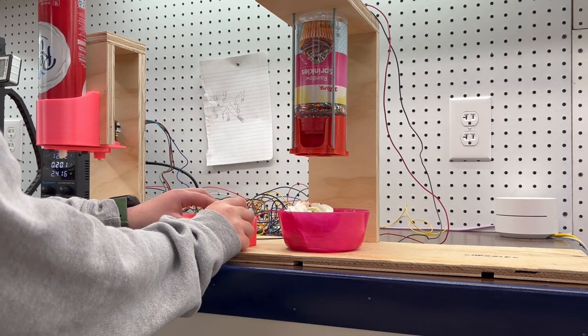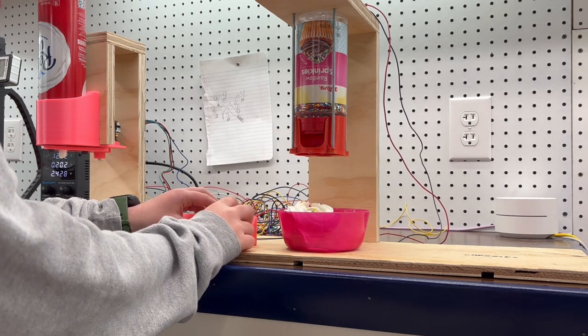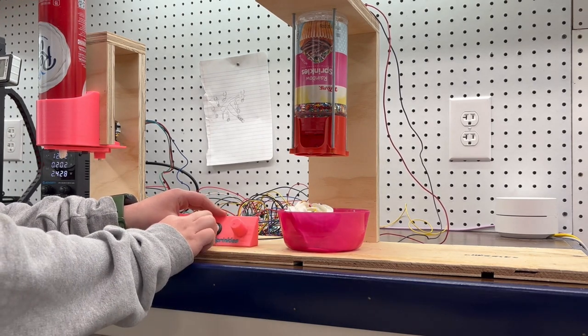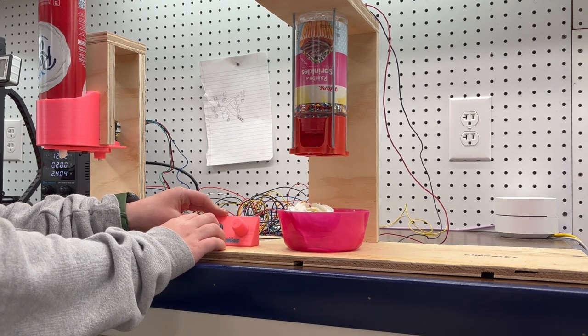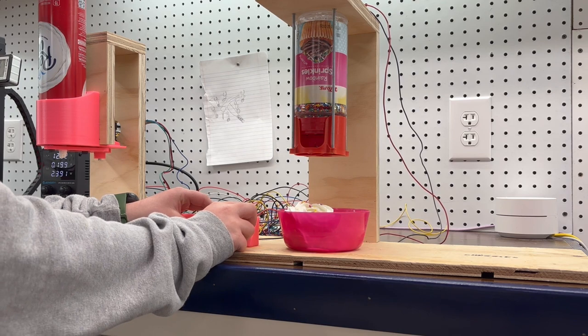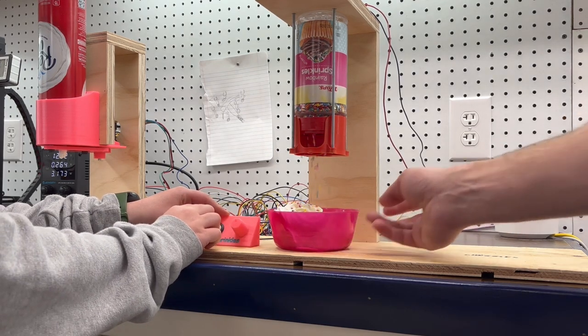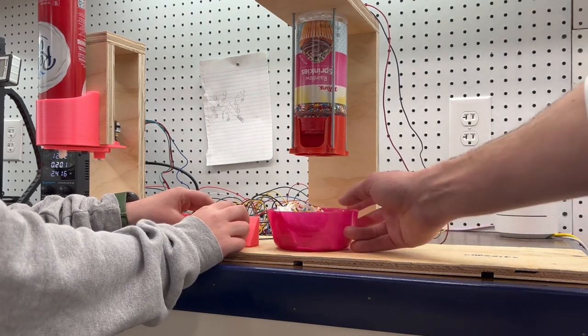So in the same way, you can turn that knob all the way to the left and get barely any sprinkles at all because it won't shake it for very long. Almost none, exactly. You can't even see it. Now turn it maybe somewhere in the middle. See how much we get there. Not bad. And then just try all the way.